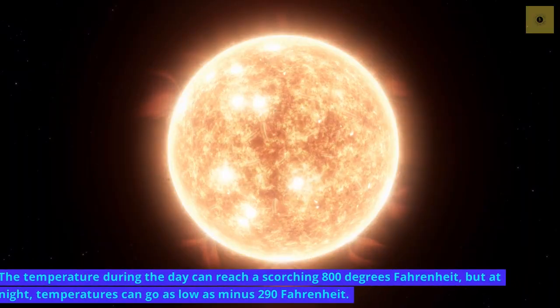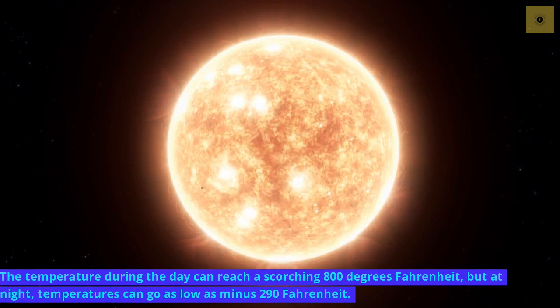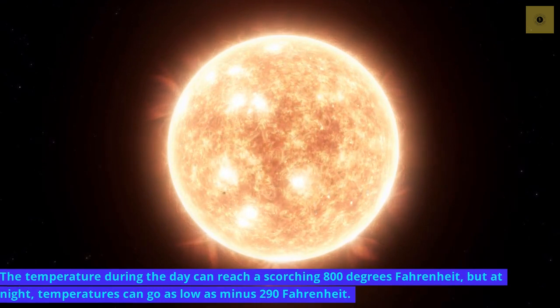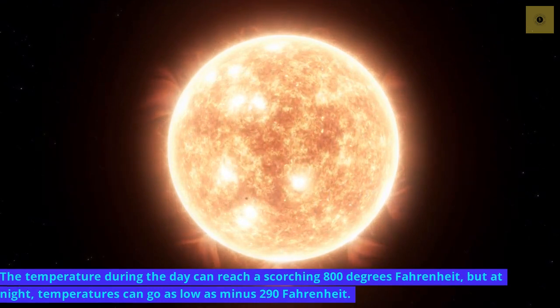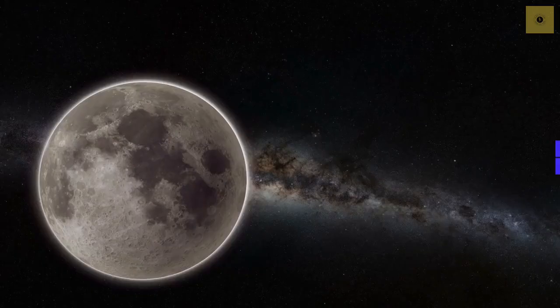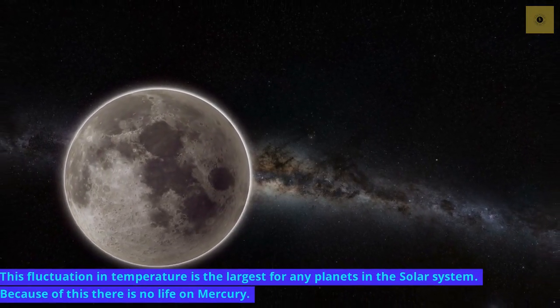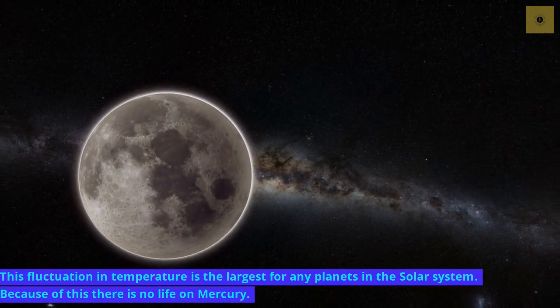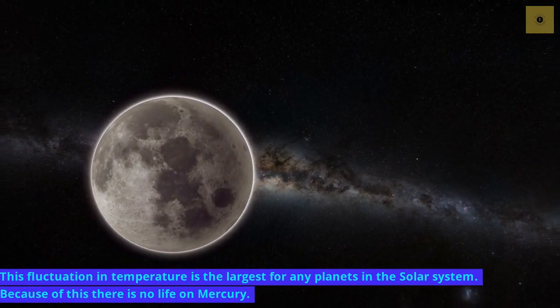The temperature during the day can reach a scorching 800 degrees Fahrenheit, but at night temperatures can go as low as minus 290 Fahrenheit. This fluctuation in temperature is the largest for any planets in the solar system. Because of this, there is no life on Mercury.